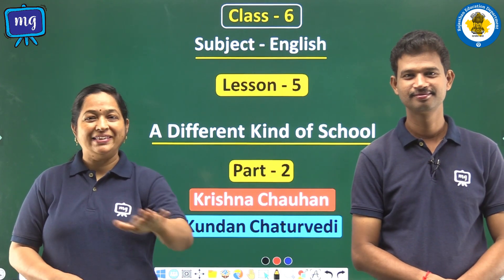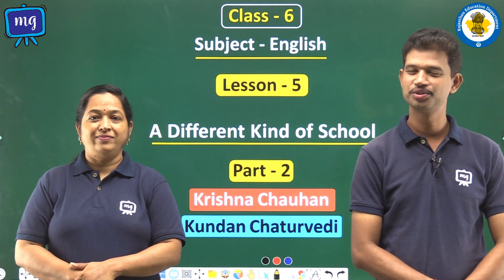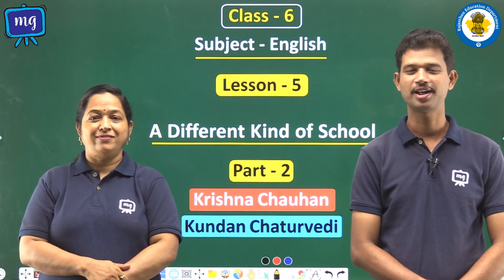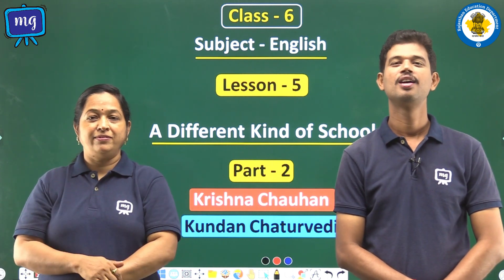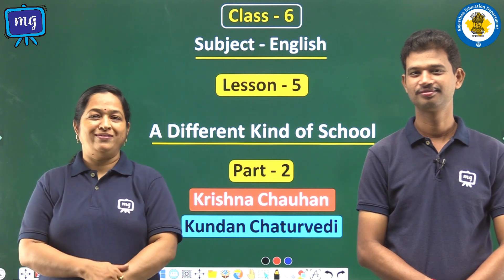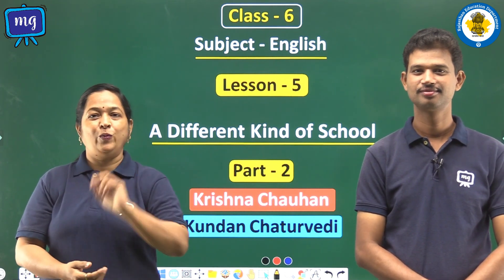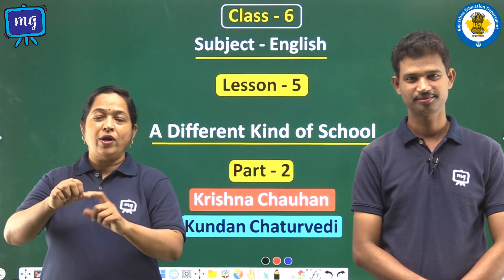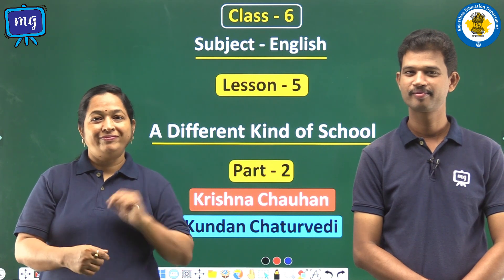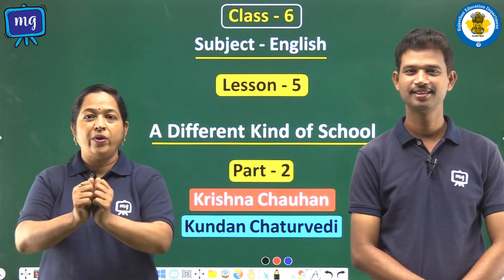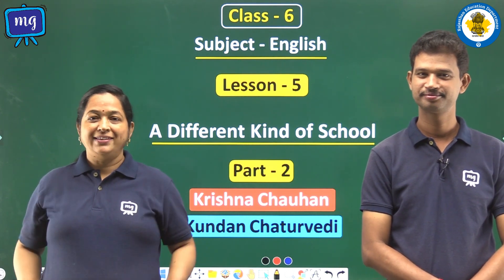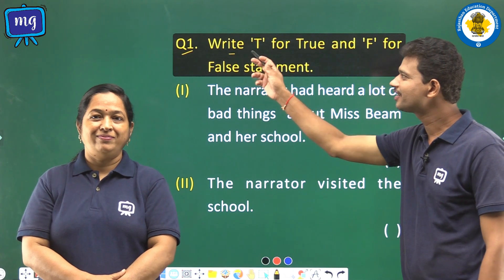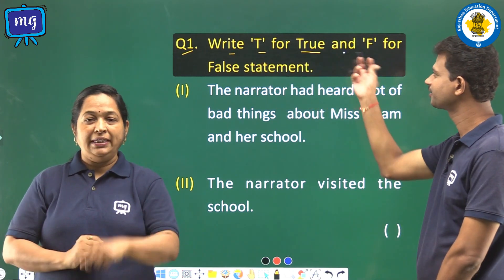Good morning children. Today we are going to discuss Class 6, subject English, Lesson 5. The lesson name is 'A Different Kind of School', Part 2. In this part we shall discuss the question and answer of the chapter. My name is Kundan Chaturvedi and with me is Krishna Chauhan. So let's start.